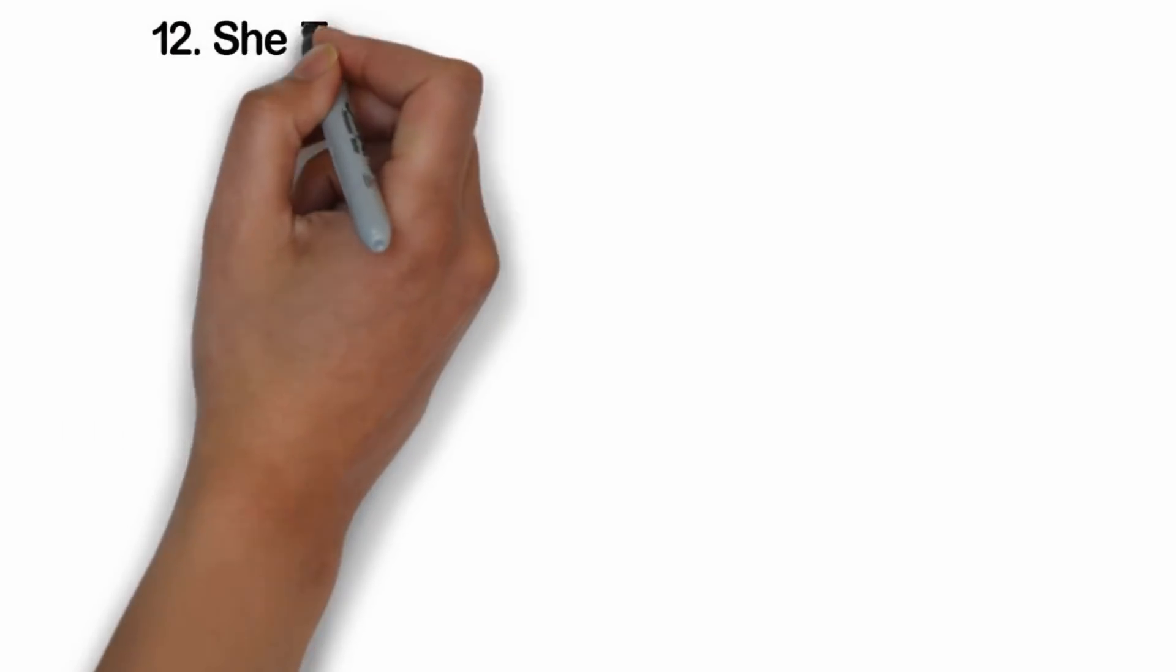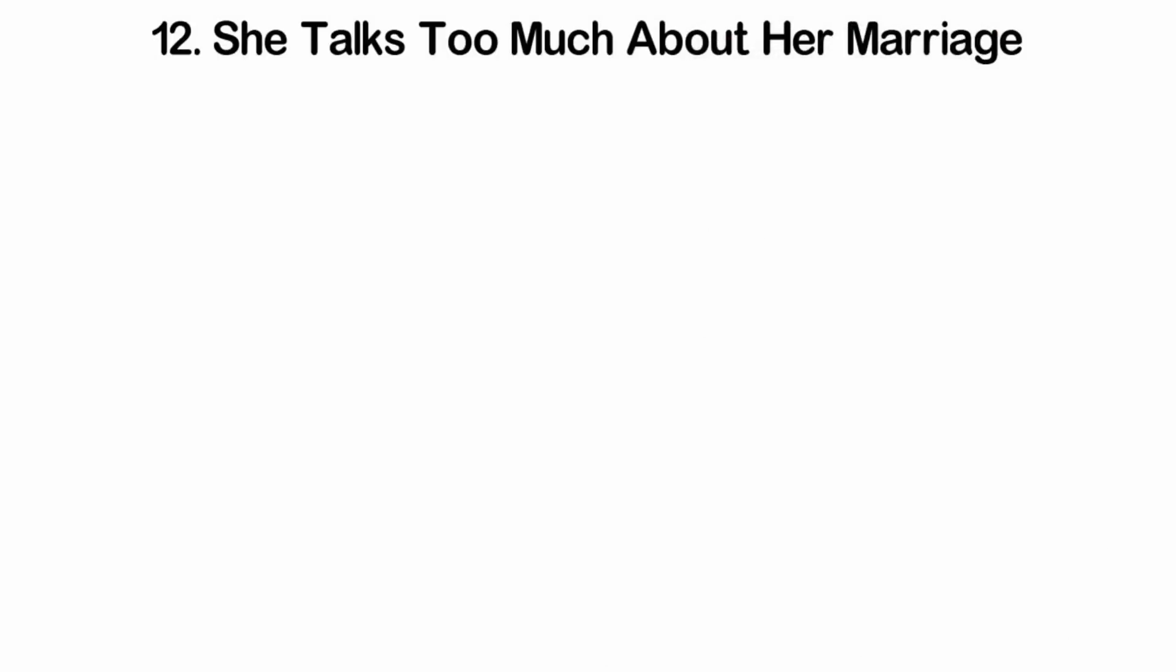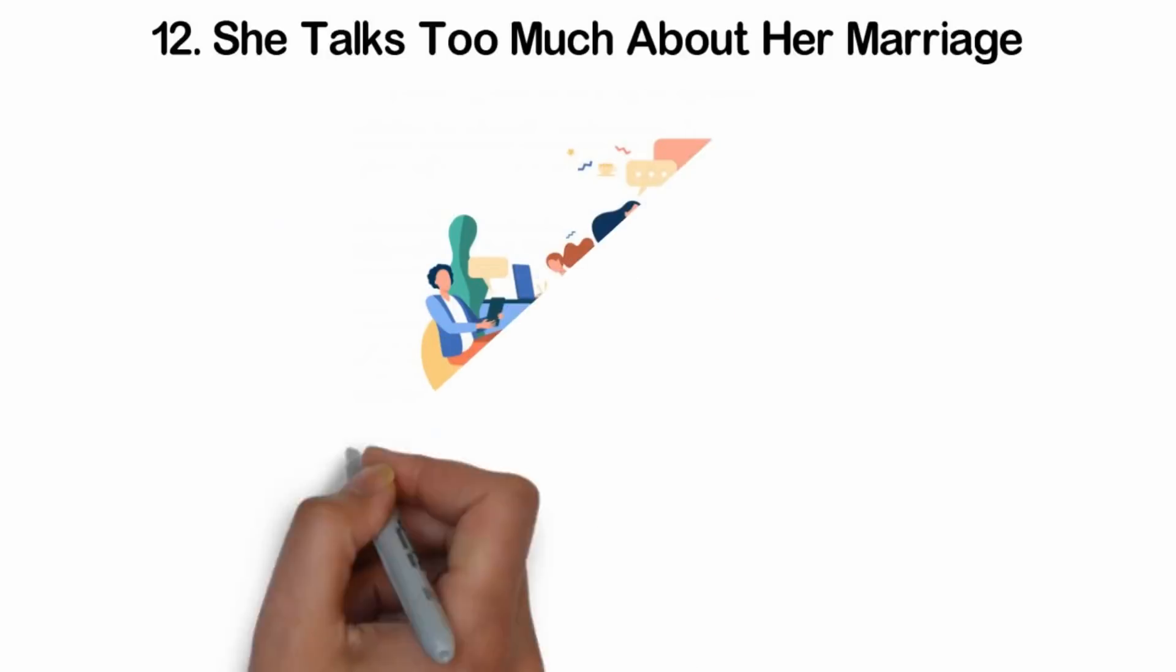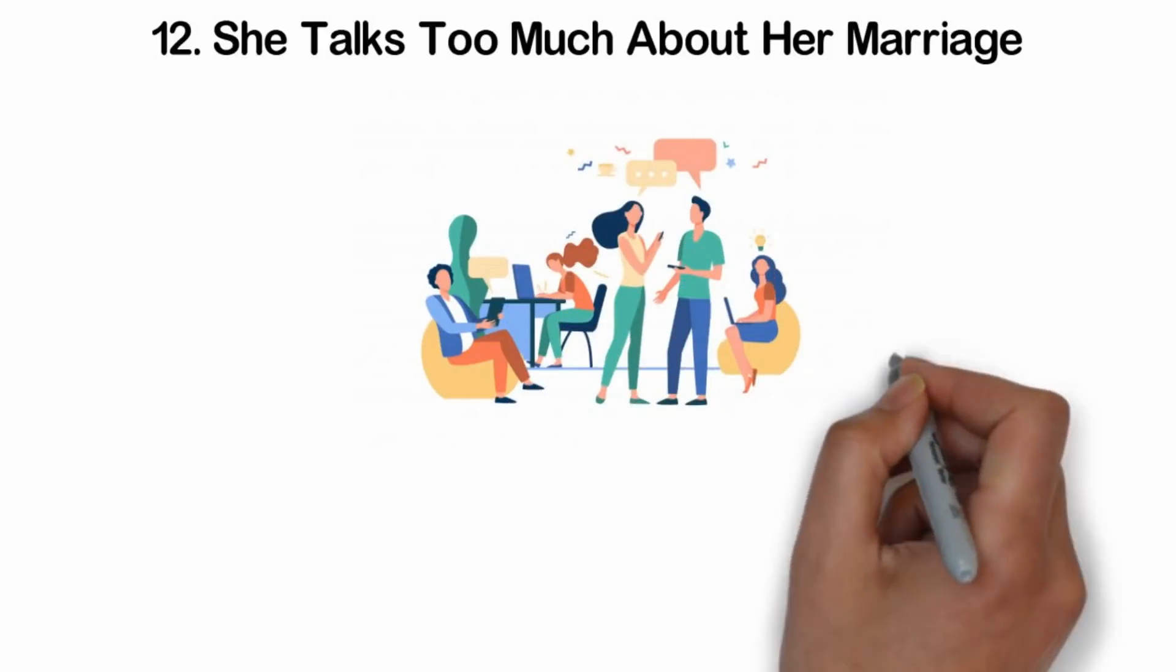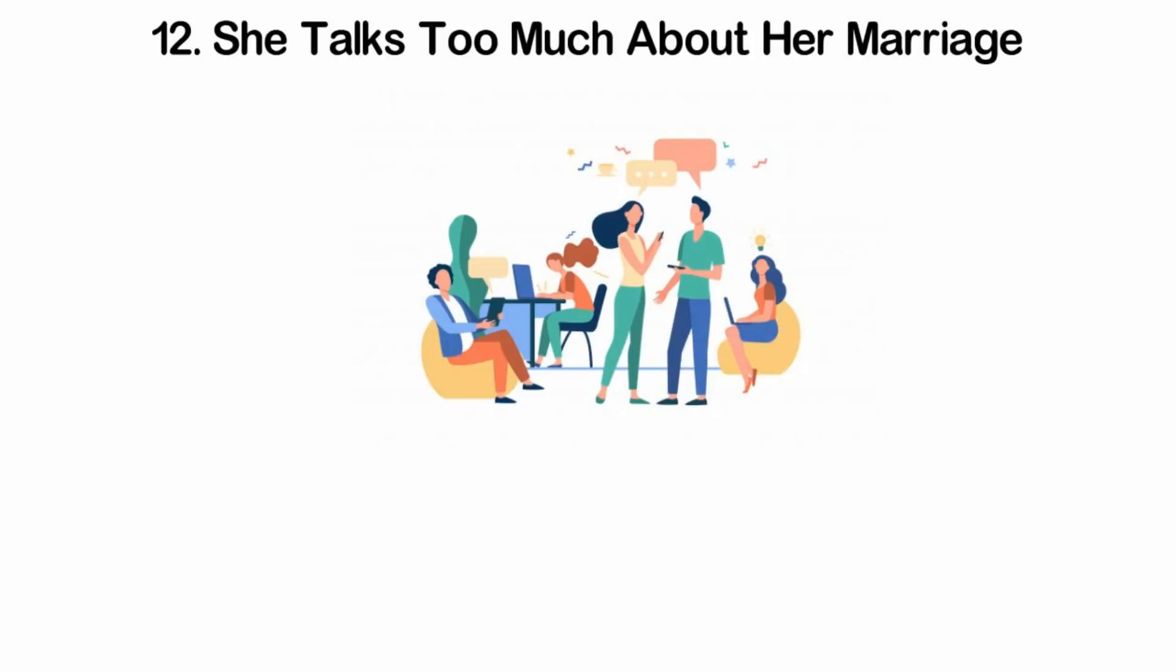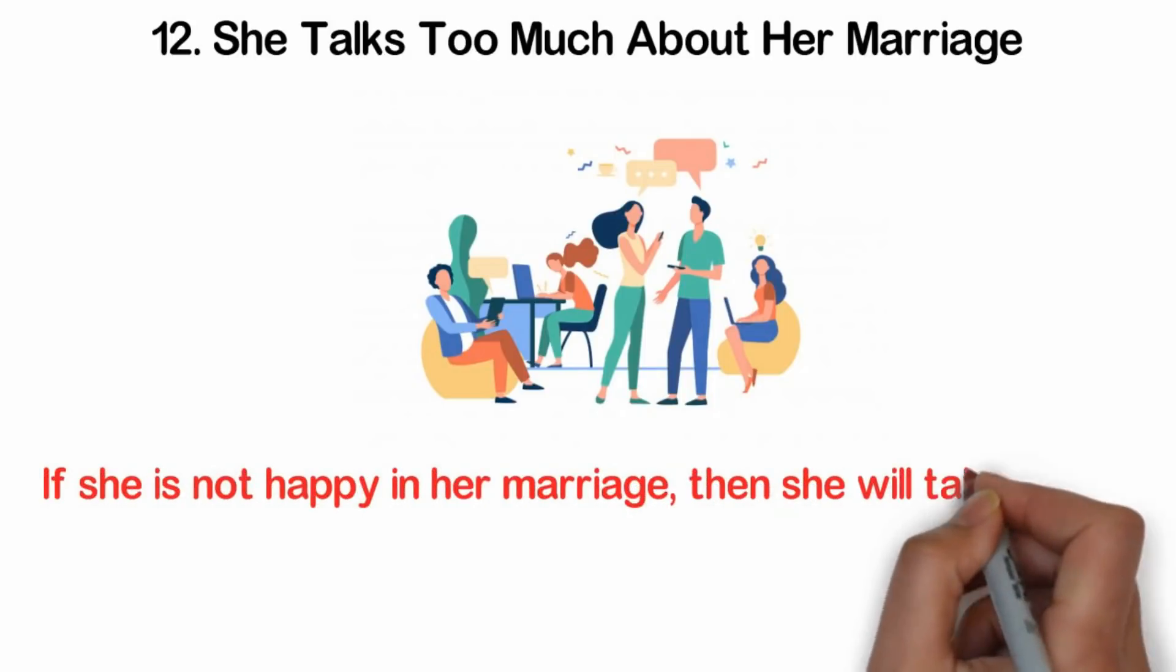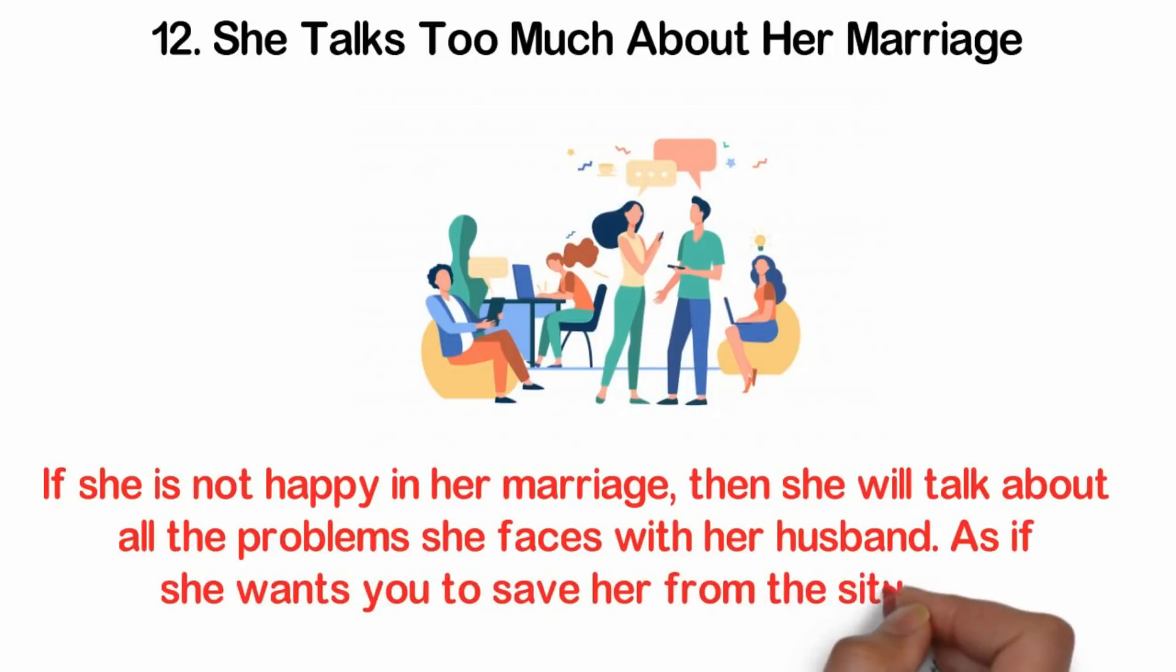12. She talks too much about her marriage. Yes, even the opposite could be true. Instead of turning your attention from her husband, she makes it a point to talk about him a lot. There could be certain reasons for this. If she is trying to make you jealous, she will talk about how awesome her husband is, and all the romantic things he does. If she is not happy in her marriage, then she will talk about all the problems she faces with her husband, as if she wants you to save her from the situation.